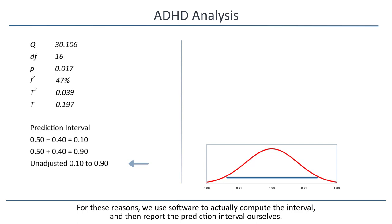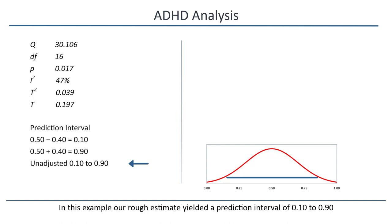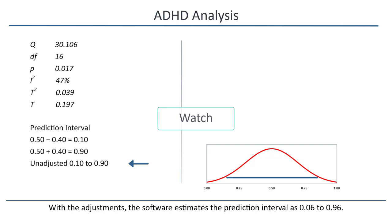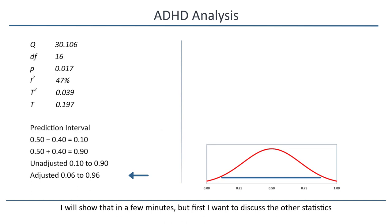In this example, our rough estimate yielded a prediction interval of 0.10 to 0.90. With the adjustments, the software estimates the prediction interval as 0.06 to 0.96. I'll show that in a few minutes, but first, I want to discuss the other statistics.